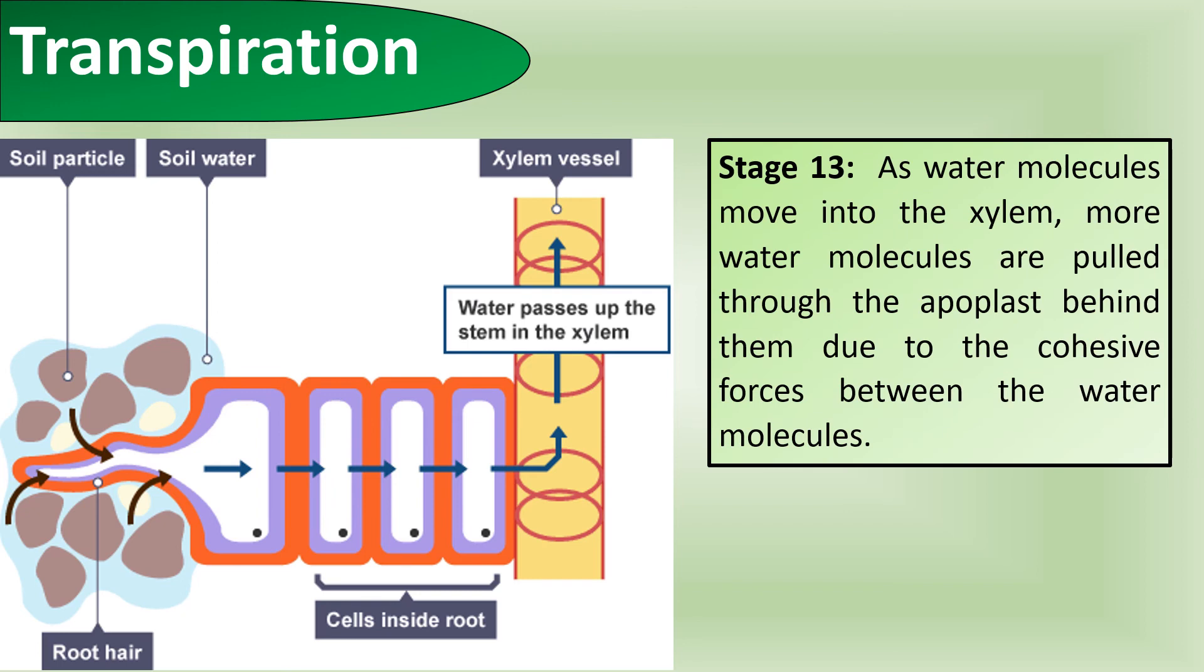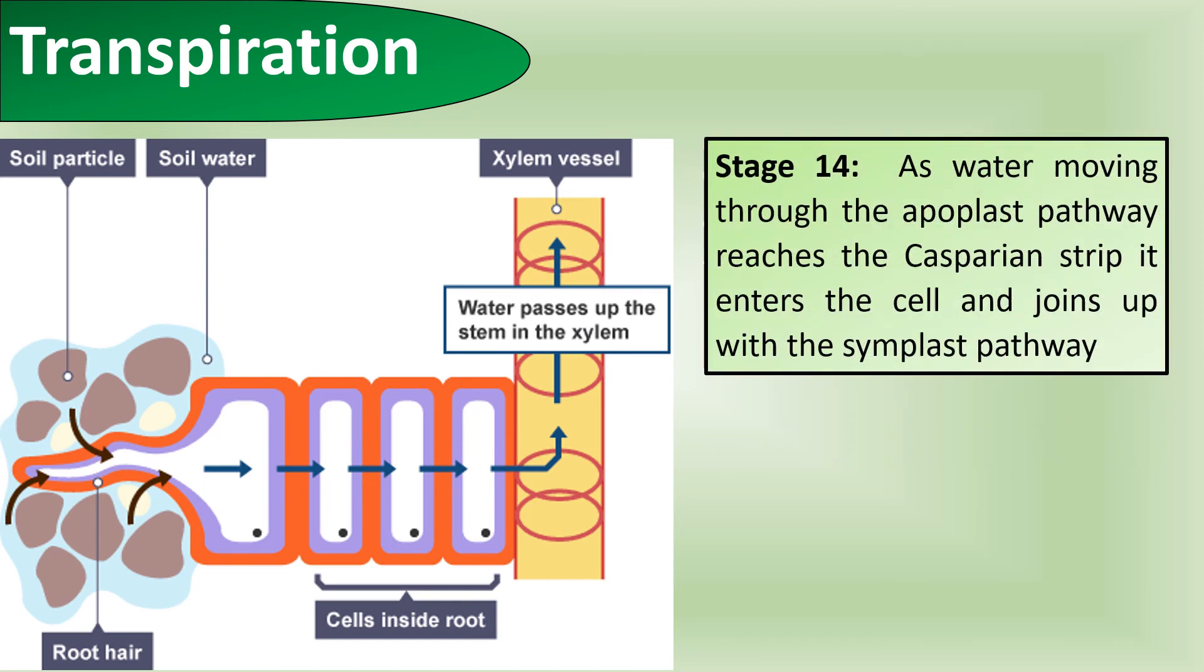As water molecules move into the xylem, more water molecules are pulled through the apoplast behind them due to the cohesive forces between the water molecules. As the water moving through the apoplast pathway reaches the Casparian strip, it enters the cell and joins up with the symplast pathway.